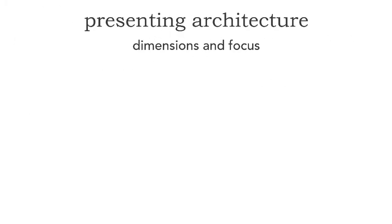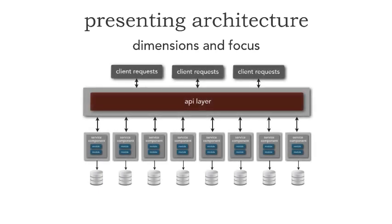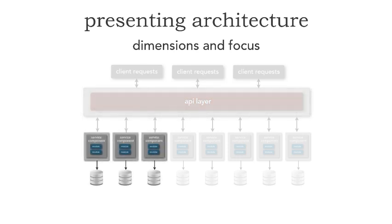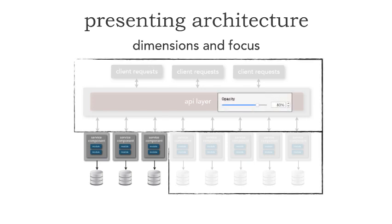Two other techniques I like: the first is dimension and focus. When presenting an architecture, if I bring this diagram up and want to talk about the API layer, you're looking at all the databases and service components — not the API layer. If I want to draw your focus to that API layer, I can highlight it so everybody knows exactly what I'm talking about. If I want to talk about particular services, the API layer and client requests go out of focus and the dimension is placed on those three services. This is easy in either Keynote or PowerPoint by creating boxes without borders, setting the opacity to about 75–80%, and animating that.